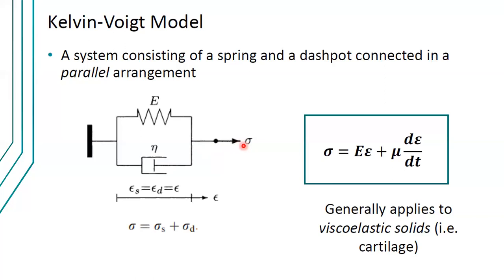In a parallel arrangement, when you apply a stress, the total stress is the sum of the stress in the spring and the stress in the dashpot, while the strain experienced by both is equal (epsilon_spring = epsilon_dashpot = epsilon). The governing equation is: total stress = E·epsilon + mu·(d epsilon/dt). This is the stress of the spring (from Young's modulus) plus the stress in the dashpot (from Newton's law of viscosity). This differential equation defines the Kelvin-Voigt model, which generally applies to viscoelastic solids.